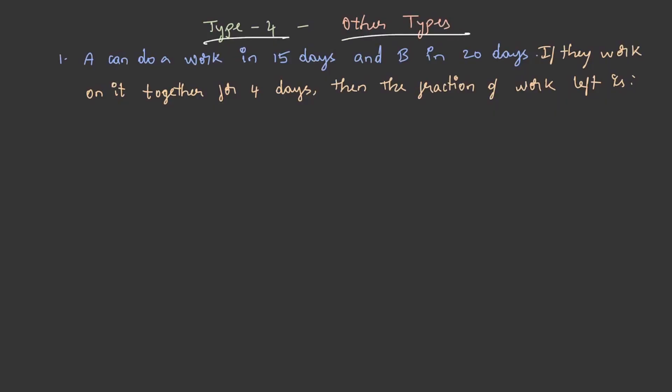Let's solve some other questions in this lecture, type 4 other types of questions in time and work. A can do a work in 15 days and B in 20 days. If they work on it together for four days, then the fraction of work left is... we're asked to find out the remaining work, so let's solve this.